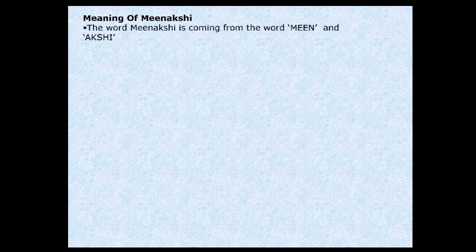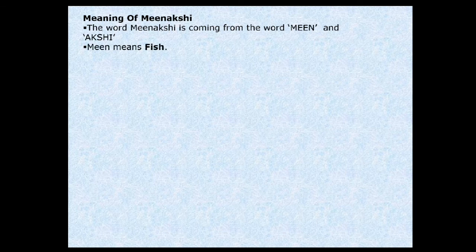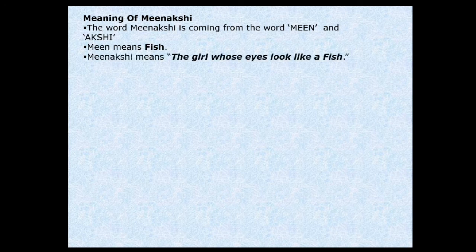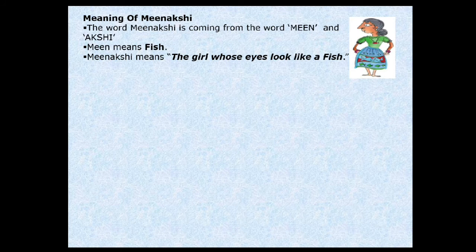Have you heard the name Meenakshi? Is there any friend in your class named Meenakshi? The word Meenakshi comes from the words Meen and Akshi — it's made of two words, Meen and Akshi, where Meen means fish. So Meenakshi means the girl whose eyes look like a fish. You can see the image given beside this — the shape of the eyes is like a fish.